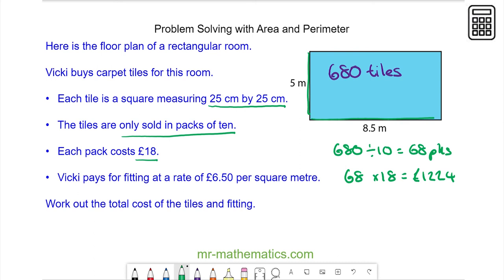I need to add on to this the cost of fitting, which is £6.50 per square meter. The area of our floor is 5 meters by 8.5 meters, which is 42.5 square meters. I multiply this value by £6.50, which is £276.25.